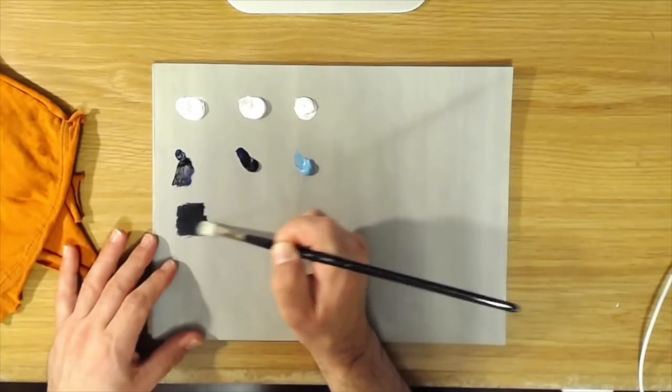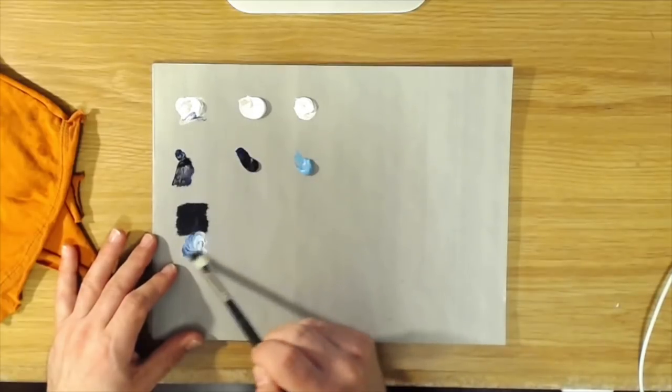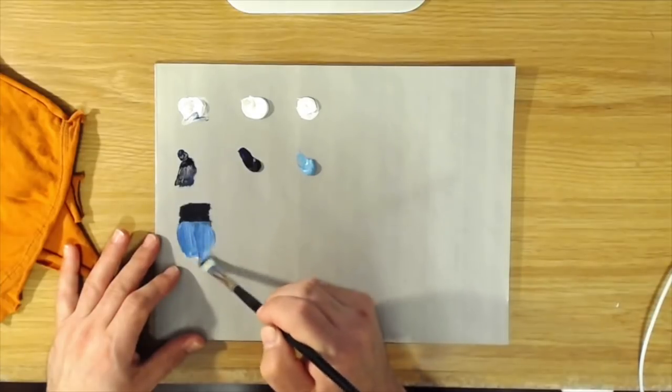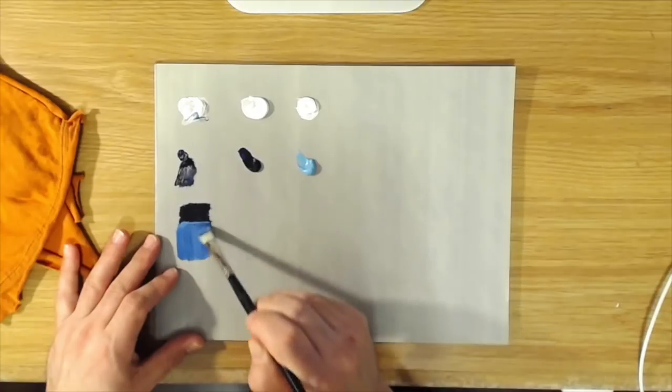You can see in its mass tone here it's very dark, but if you mix it with white it's this beautiful sort of greenish blue.